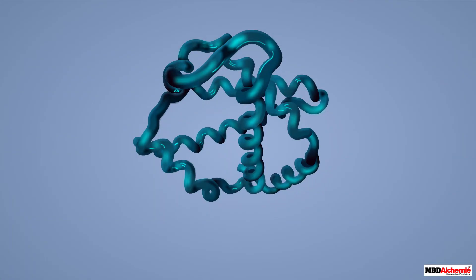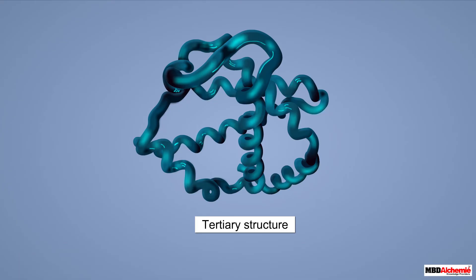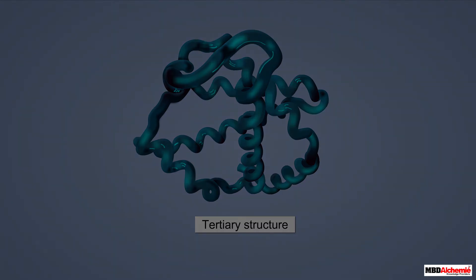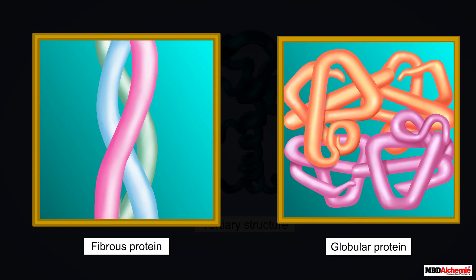The further folding of the secondary structure of proteins gives rise to the tertiary structure of proteins. The tertiary structure represents the overall folding and coiling of the peptide chains. It is the tertiary structure of a protein that gives a geometric shape to the protein, which can be a fibrous or globular shape.